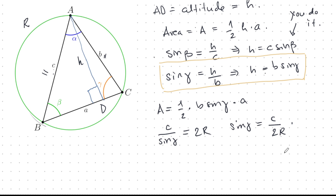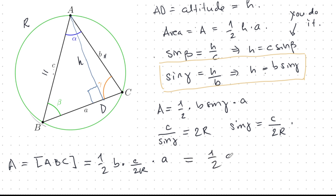Plugging everything together: Area = (1/2) · b · sin γ · a = (1/2) · b · (c/2R) · a = abc/4R. So the area of any triangle equals abc divided by 4R. Note this was derived for an acute triangle.